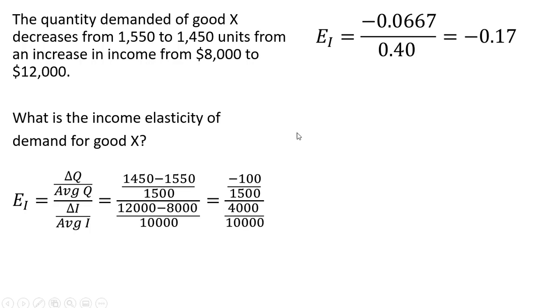And doing the final math here, minus $100 divided by $1,500 is minus 0.0667. And in the denominator here, $4,000 divided by $10,000 is 0.4. And this will simplify to minus 0.17.